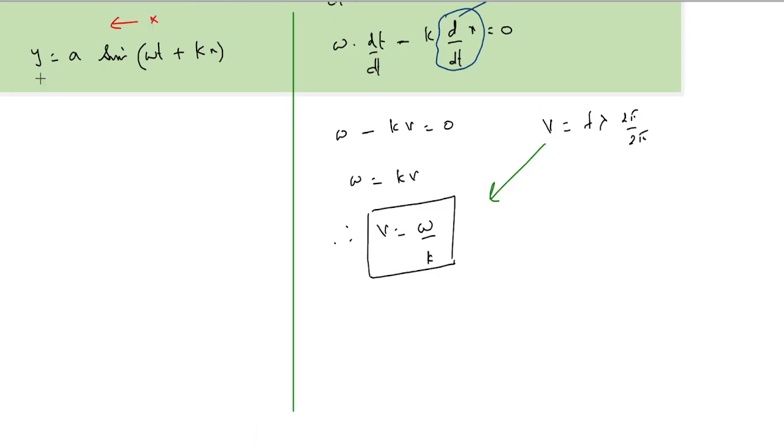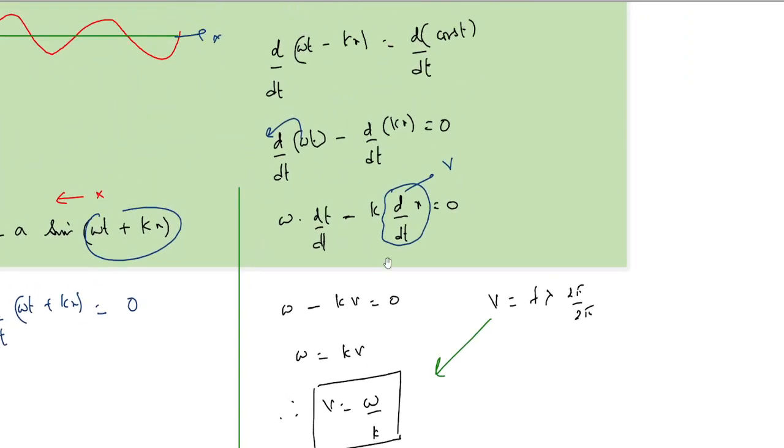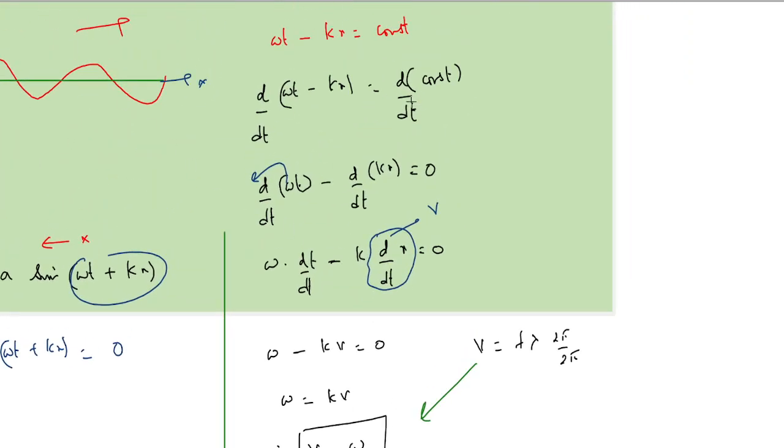To justify this, we again try to find the velocity from here. So this is the constant. Differentiating that constant, omega t plus kx is equal to 0 because differentiating a constant would give us 0.